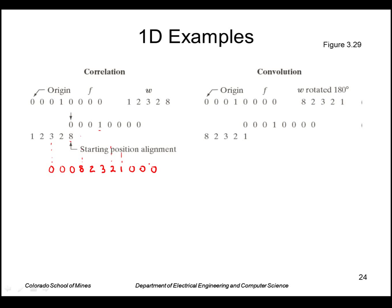To do convolution, remember I first flip the mask and then I do correlation. So similarly I start in this position, everything is zero, zero, zero.